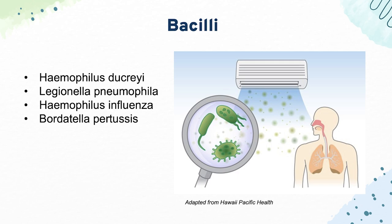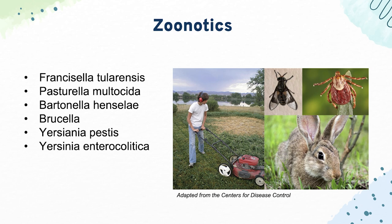Next up are our zoonotic organisms, which are essentially all gram-negative. Our first one is Francisella tularensis — the main reservoir is rabbits. Next, we have Pasteurella multocida, which causes cellulitis and osteomyelitis, typically from animal bites. Next, Bartonella henselae causes cat scratch disease with severe lymphadenopathy. Brucella causes Brucellosis marked by undulant fevers. And Yersinia pestis causes the plague — its reservoirs are fleas.